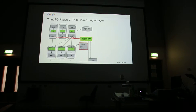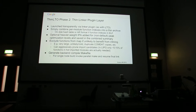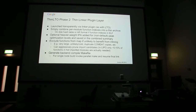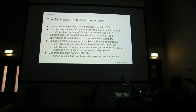Phase two is the thin linker plugin, launched via a linker plugin as with LTO today. By default, it's simply combining these per-module function indices into a thin archive. You could add heavier weight IPA if you wanted, for peak optimization, and save that in the combined summary as well. Also, to keep the size of this map down and reduce the number of import candidates, you could aggressively prune out candidates unlikely to be useful to inline from.